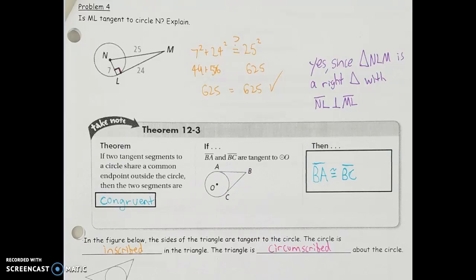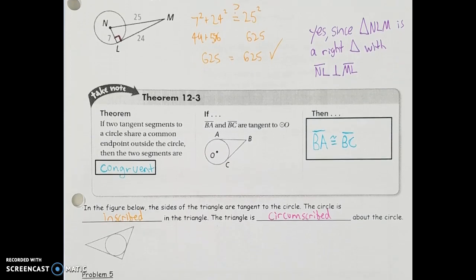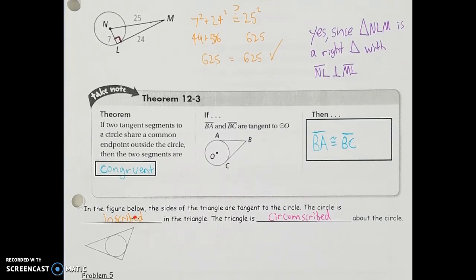There are also some vocabulary terms to revisit. When the sides of a triangle are all tangent to a circle, the circle is inscribed in the triangle. Inscribed means the circle is drawn within the figure. The other way to say it: the triangle is circumscribed about the circle, meaning the triangle is drawn around the circle.